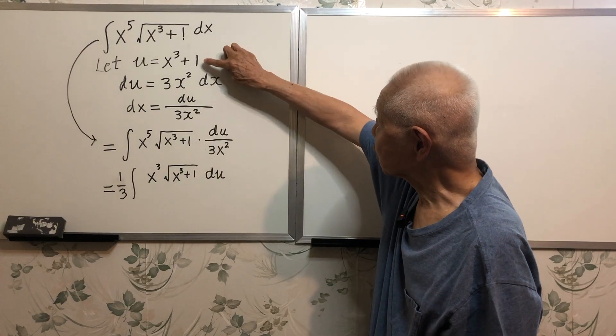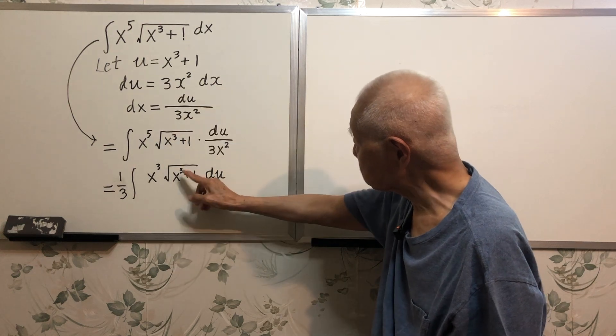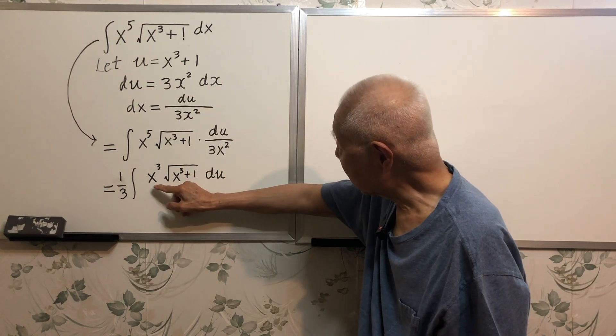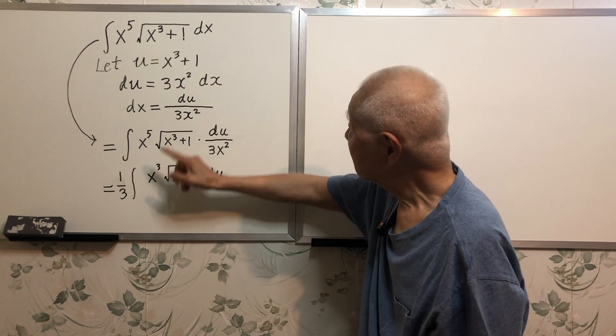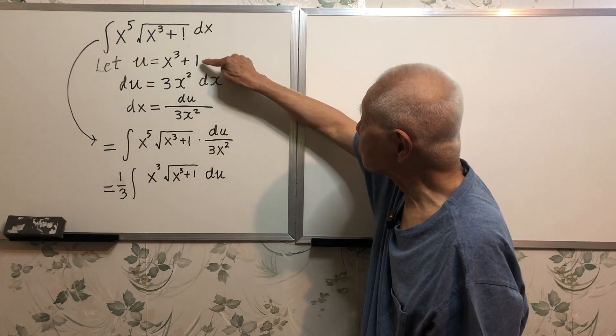Now I use this. x cubed plus 1 is just u. So this part is u. And the x cubed is what? x cubed is u minus 1.